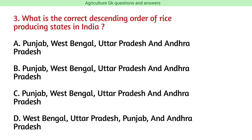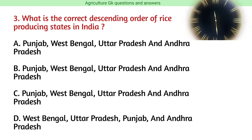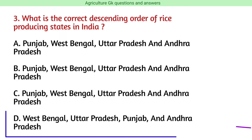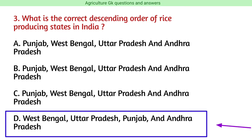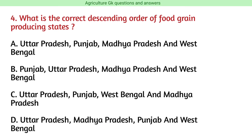Question number 3. What is the correct descending order of rice producing states in India? The correct answer is option D, i.e., West Bengal, Uttar Pradesh, Punjab, and Andhra Pradesh.